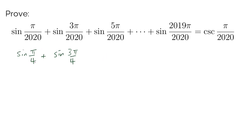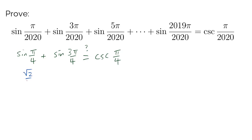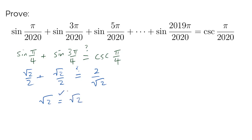If 4 is going to be in the denominator, we want to stop when the numerator gets to 1 less than the denominator, so we stop at sine of 3 pi over 4 and compare against cosecant of pi over 4. Sine of pi over 4 and sine of 3 pi over 4 are both root 2 over 2, giving us 2 times root 2 over 2 on the left. Cosecant of pi over 4 is 1 over sine of pi over 4, or 2 over root 2, which rationalizes to root 2. So yes, we have the equality.